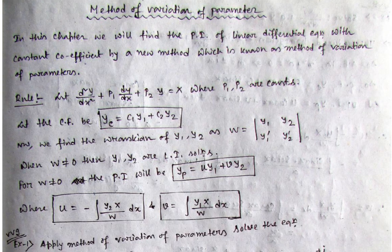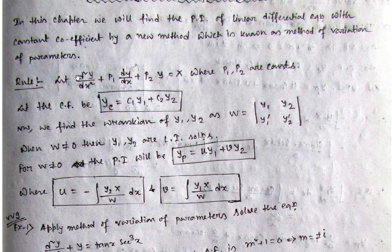Suppose a second-order differential equation with constant coefficients is given, where the right-hand side is not equal to zero — that is, it equals X. We know how to find the complementary function, and say the complementary function is c1·y1 plus c2·y2, where y1 and y2 come from the auxiliary equations.